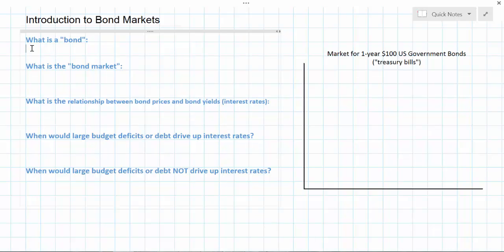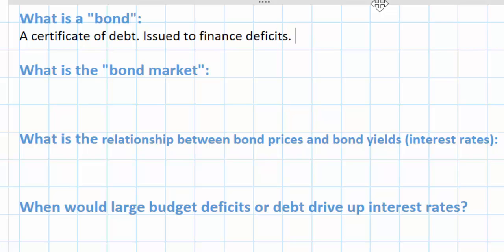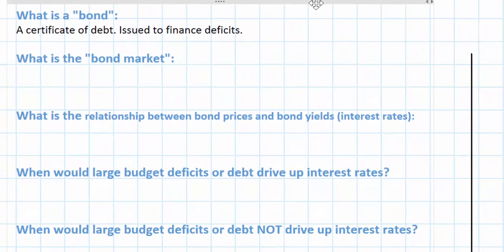We're going to first define what a bond actually is. Everybody has heard of government bonds, but students often don't actually understand what a bond is. Defined simply, a bond is basically a certificate of debt. Bonds may be issued by corporations or, in this case, governments in order to finance deficits — meaning that governments can issue bonds in order to spend money that they don't actually have.